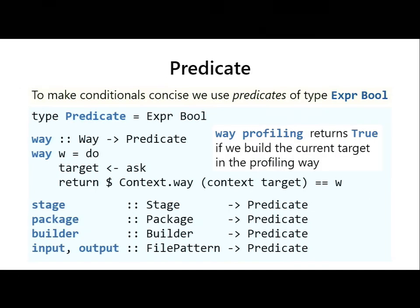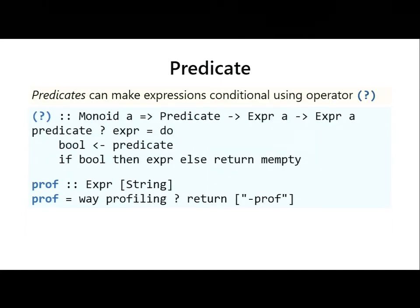We introduce predicates — expressions that compute booleans — to handle the pattern of conditional arguments more conveniently. For example, 'way profiling' is a predicate that returns true if we are currently building in the profiled way. Implementation is easy: look up the current target and check that the way matches the parameter. There are similar predicates to check the current stage, package, etc. We apply these predicates using the question-mark operator: we evaluate the predicate — if true, we return the expression unchanged; otherwise we return the empty expression and skip it. So 'prof' is a conditional expression that adds dash-prof to the command line only if we're building in profiling way.